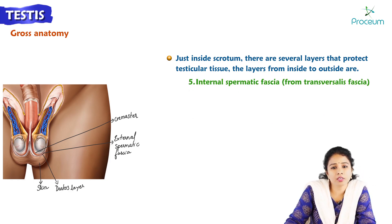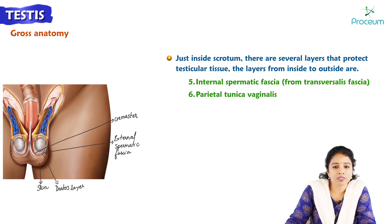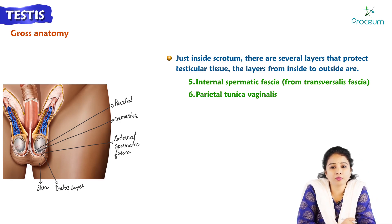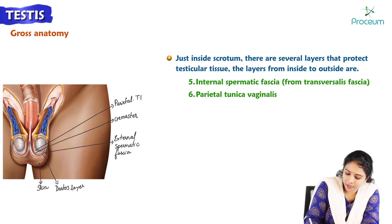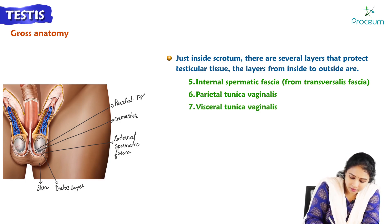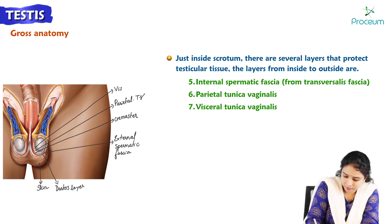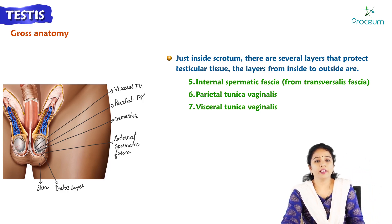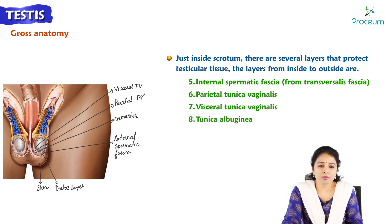Deep to the cremaster muscle layer is the parietal tunica vaginalis. Deep to the parietal layer is the visceral layer of tunica vaginalis. Deep to this visceral layer of tunica vaginalis, the testis is covered by tunica albuginea.